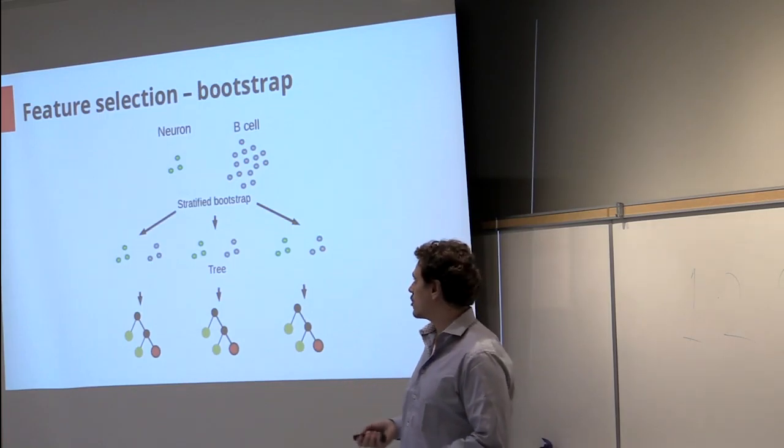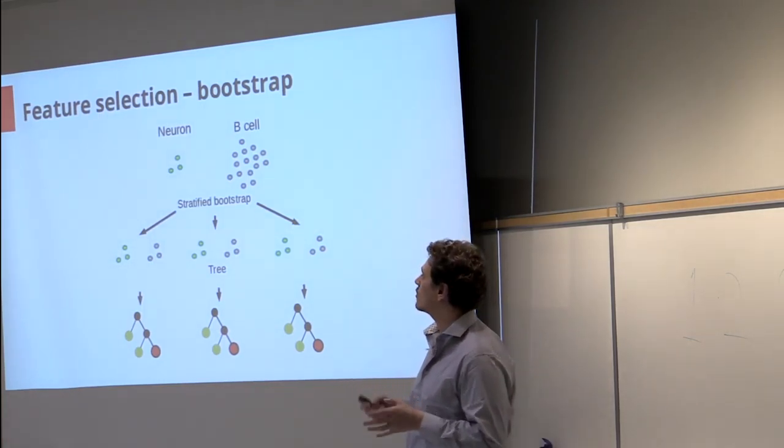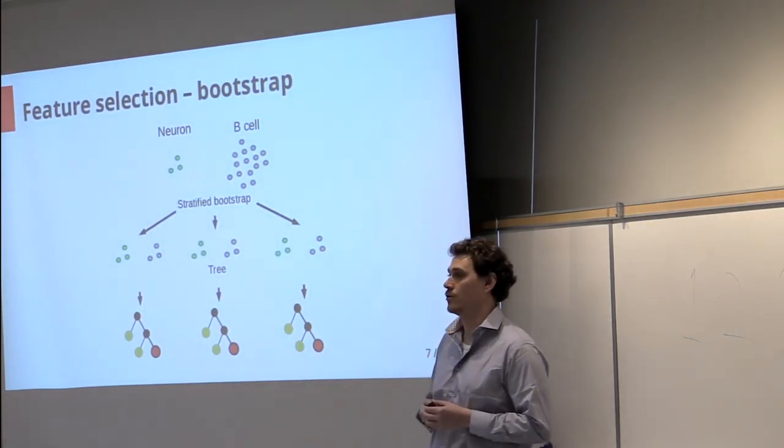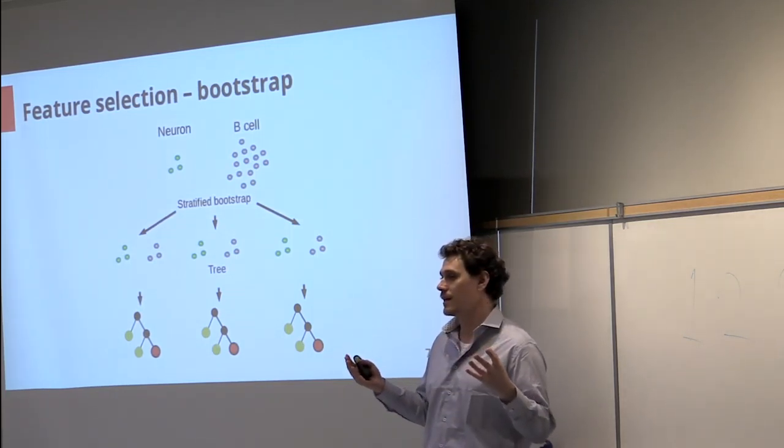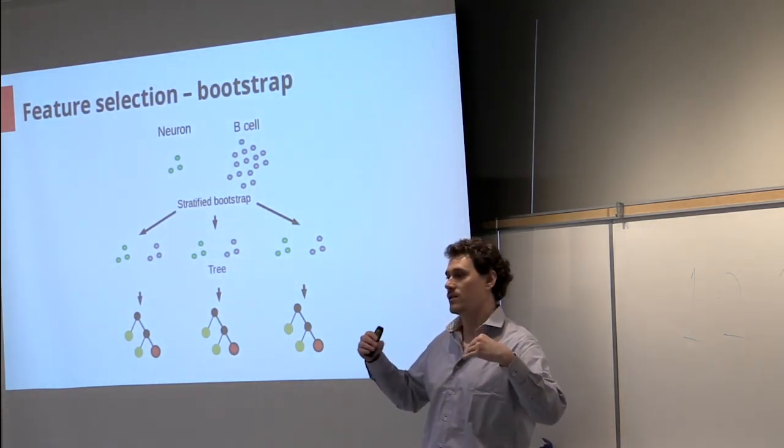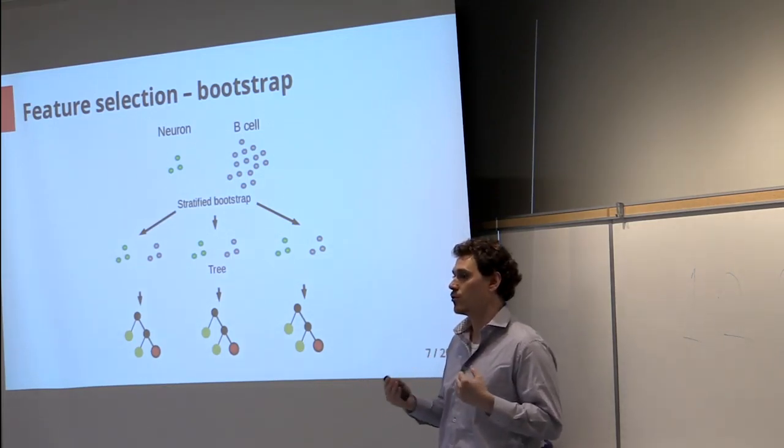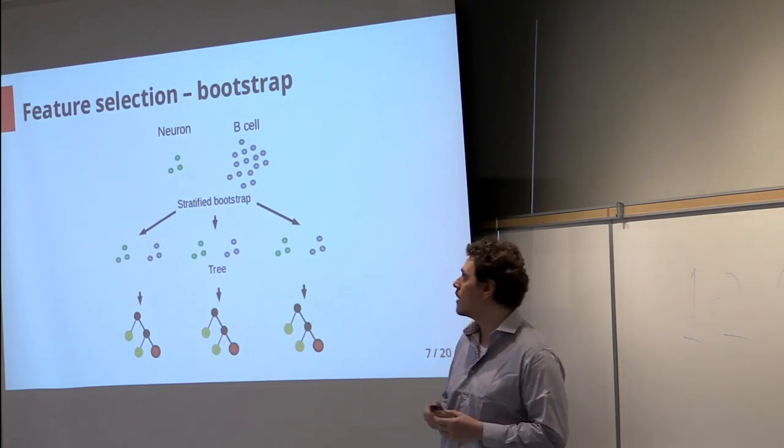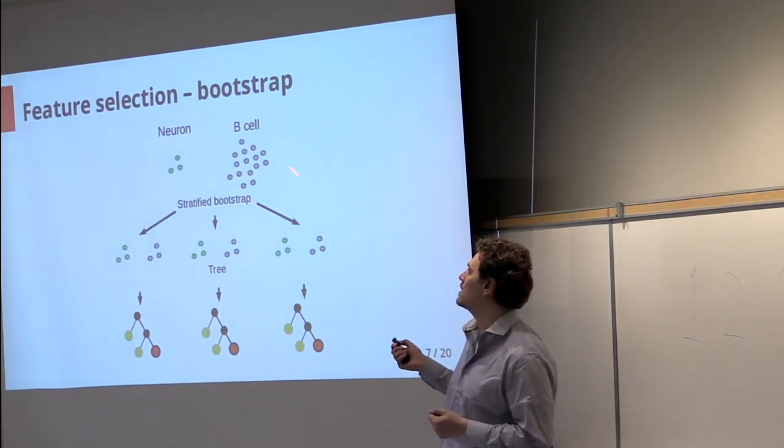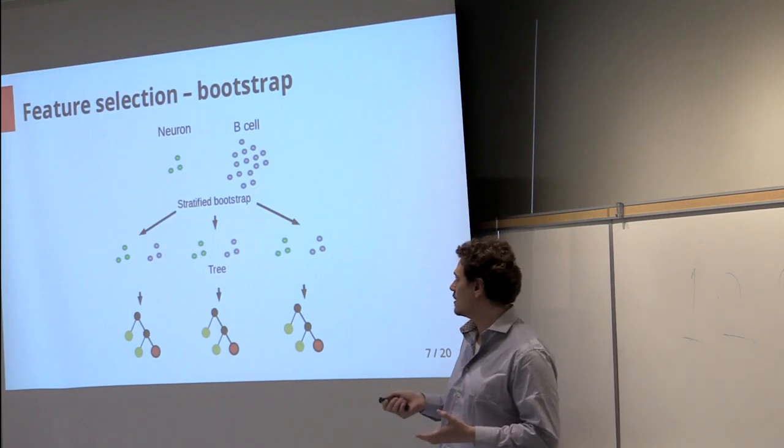Another modification that we added to the base random forest is on the bootstrap. So instead of randomly selecting samples to create our decision trees, which is known to introduce bias when the samples are unbalanced, for example where B cells are over-represented...